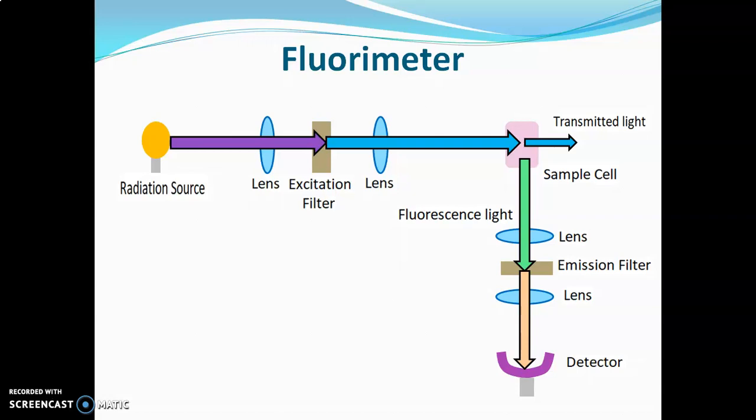The detector is kept at 90 degrees to the radiation source because if it were kept in a straight line at 180 degrees, the transmitted light would interfere with the fluorescence light and give wrong results. To avoid this interference, the detector is kept at 90 degrees to the radiation source.